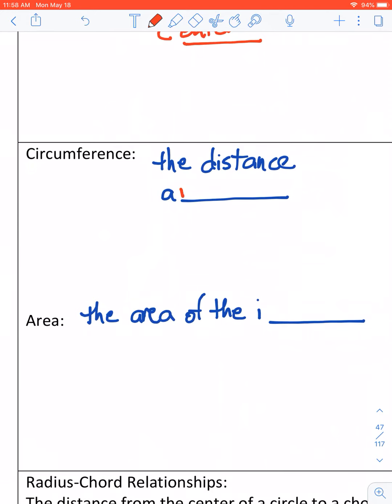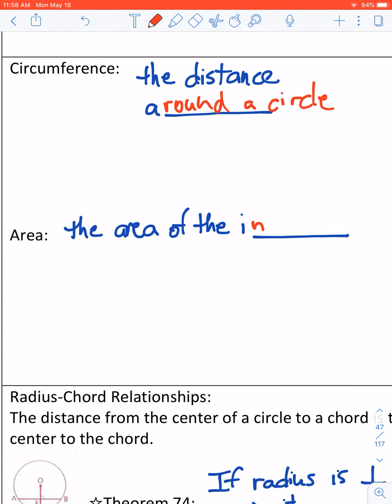Circumference. It's the distance around the circle. We know the formula. It's 2πr. And the area of the circle is referred to as the interior.